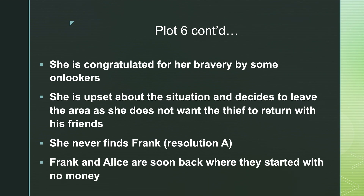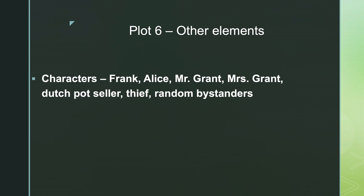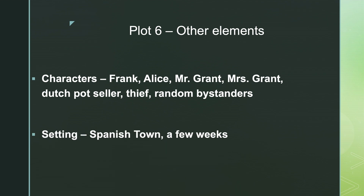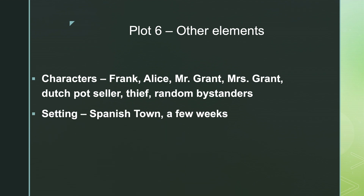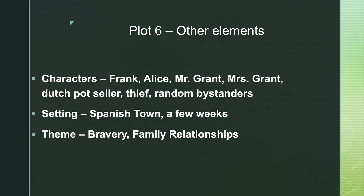Frank and Alice, however, are soon back where they started with no money. Who are the characters in this section? We have Frank, Alice, Mr. Grant, Mrs. Grant, the Dutch pot seller, the thief, and random bystanders. The setting is Spanish Town over the period of a few weeks. The theme is bravery and family relationships.